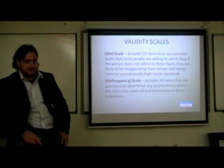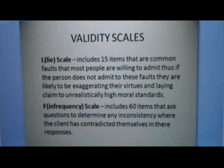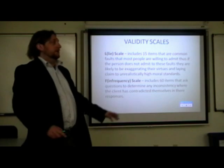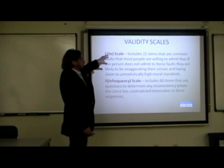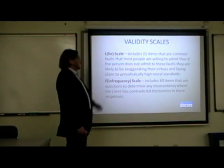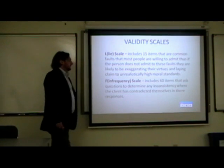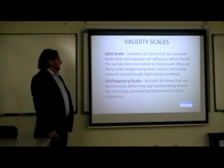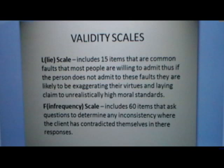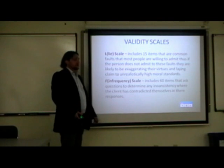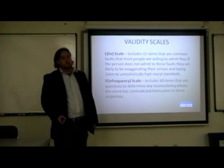So what are these validity scales? The validity scales include a number of different items. The first one is the L scale, or lie scale, and this is 15 items that are common faults that most people are willing to admit to. So if a person doesn't admit to these faults, it's likely that they are lying or exaggerating their virtues, or laying claim to an unrealistically high moral standard.